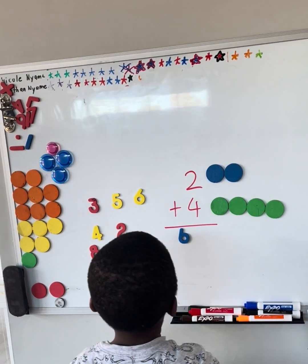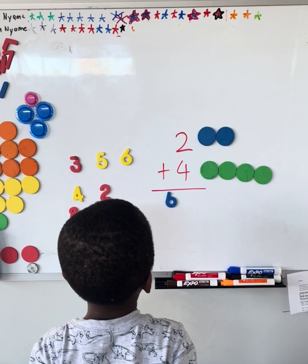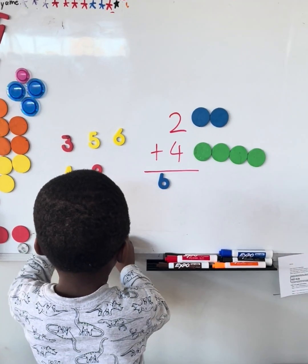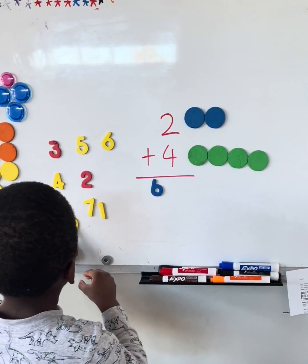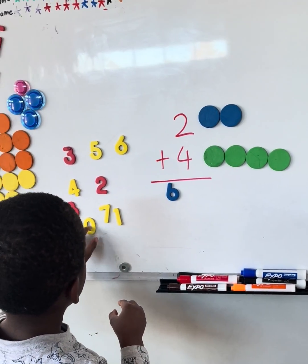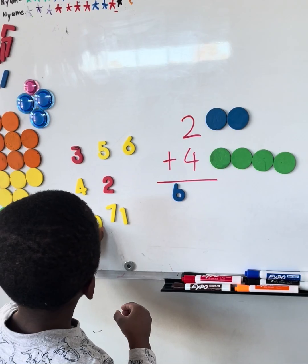So he does two things here that are really important. When he counts, you can see that he's not skipping any numbers. Counting and touching each circle is critical, especially at the beginning so that they don't skip numbers.